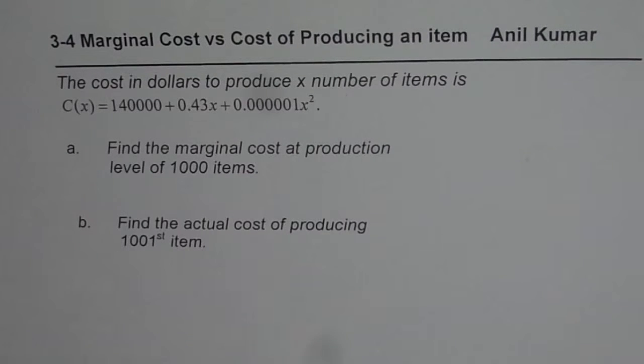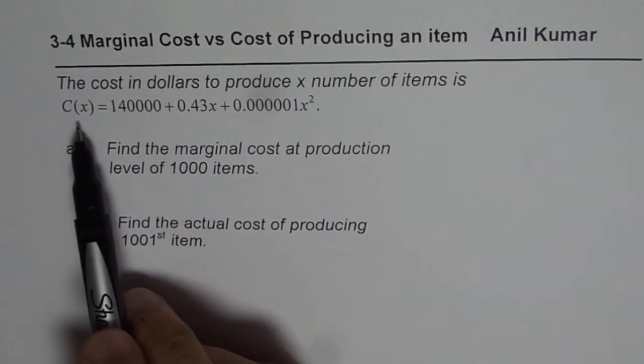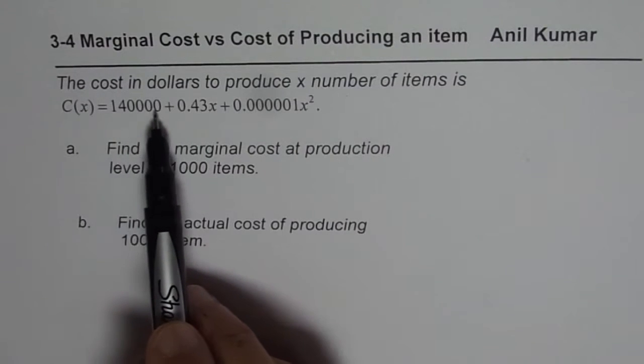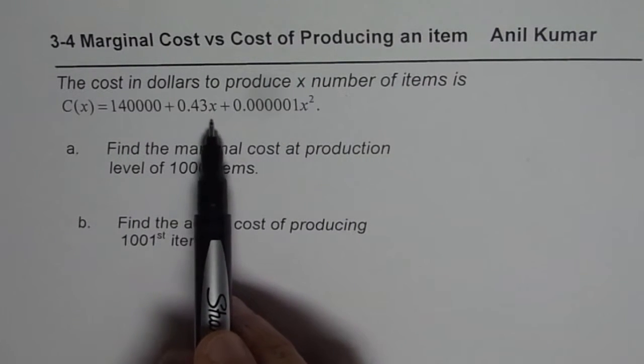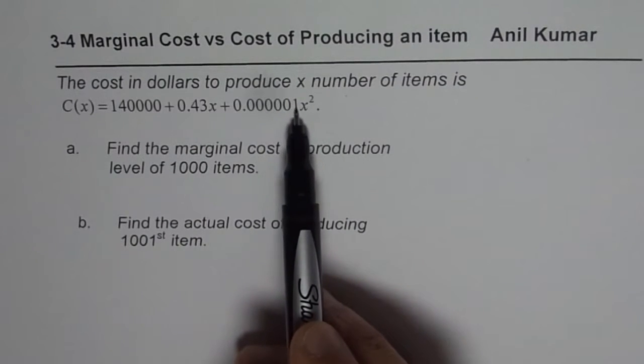The question here is, the cost in dollars to produce X number of items is C of X equals to 140,000 plus 0.43X plus 0.000001X squared.